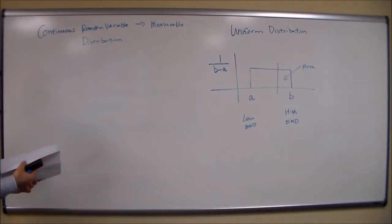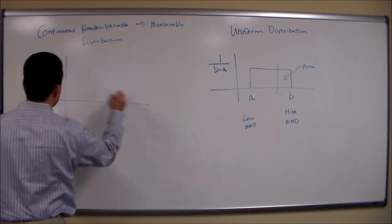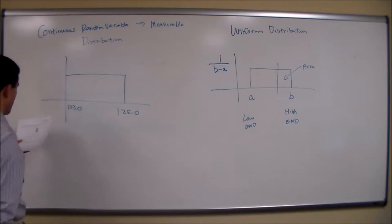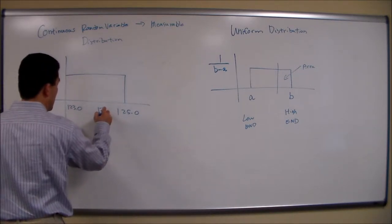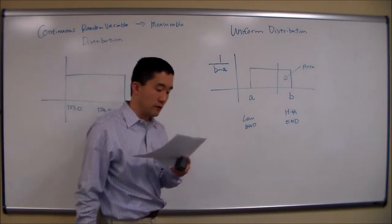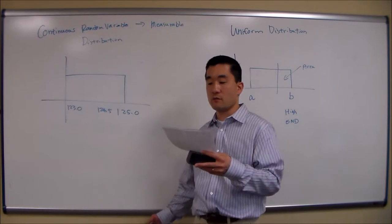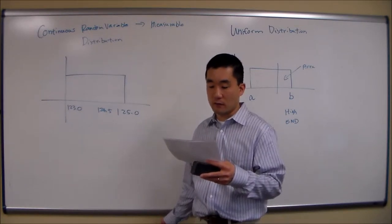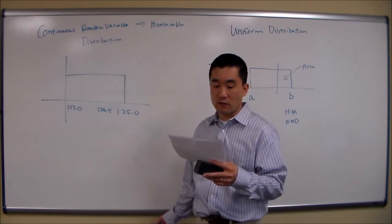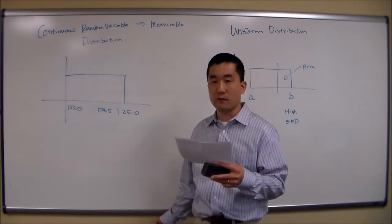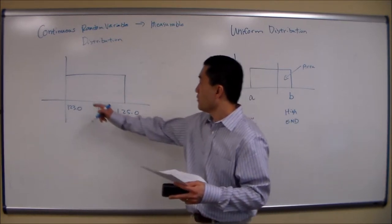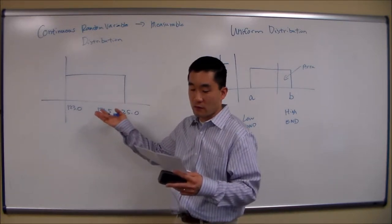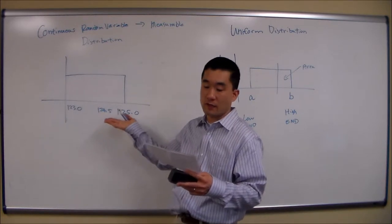Let's look at the example in the lecture notes. The question says an electricity company wants to study the electricity distribution system — the electricity is measurable. It aims to distribute electricity uniformly between 124.5 volts and 125 volts. You know it's a uniform distribution problem because the problem states the electricity is distributed uniformly.